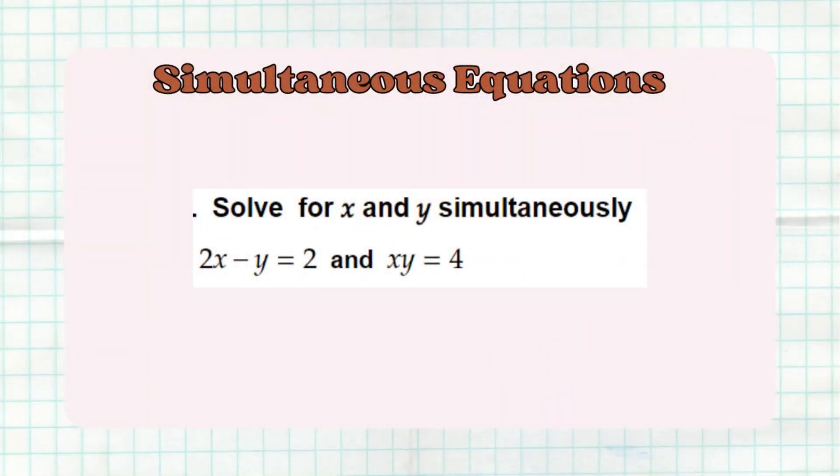Moving to simultaneous equations — this is an example where you basically need to solve for x and y. A tip I can give you is that with simultaneous equations, always make the linear equation your equation one. And number six is substitution.